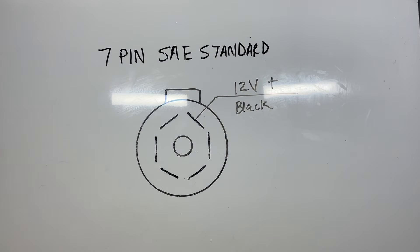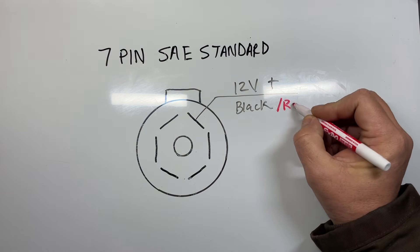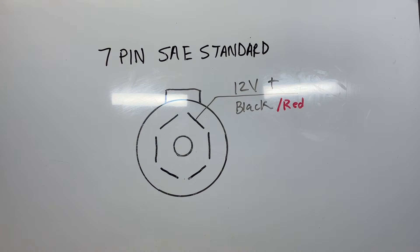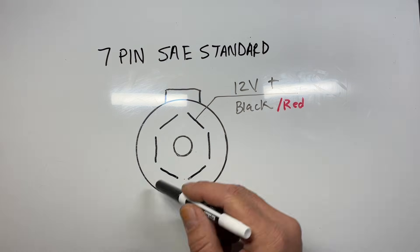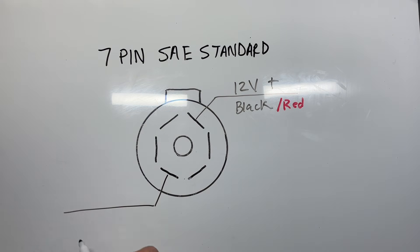Now some manufacturers do this where this is either black, and I've also seen it in red. So you can't always go by the color combinations, but we're going to identify which is which here. Now directly opposite of that, it's going to be your 12-volt negative. This is going to be your 12-volt negative or your ground, and this is going to be a white wire.